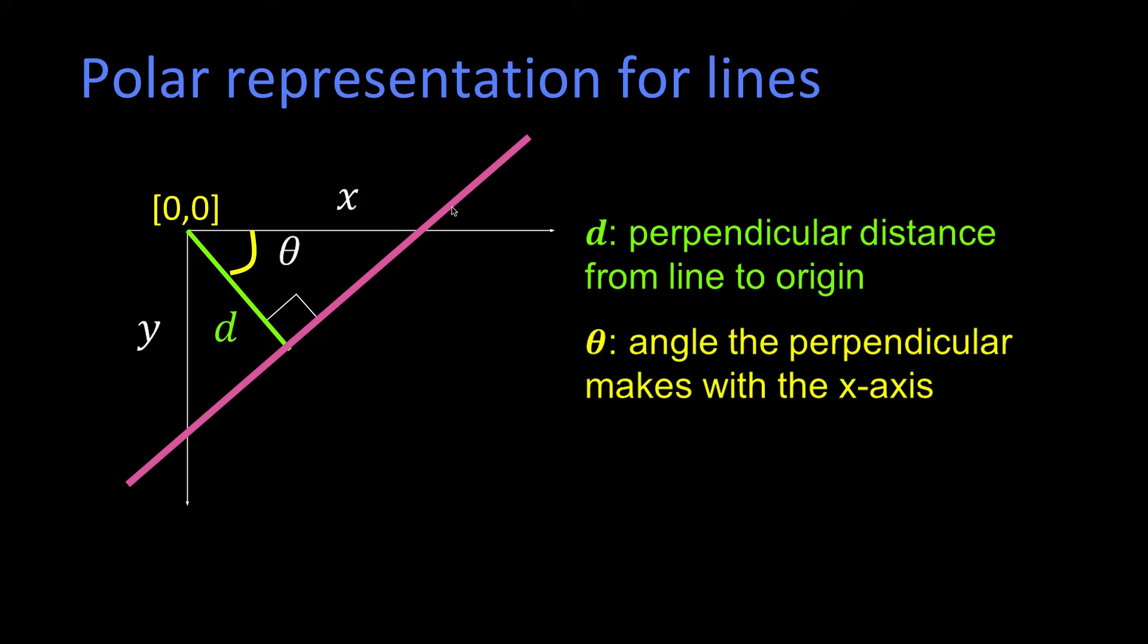You can see that the dot product of any point on the line (x, y) dotted with the (cos θ, sin θ) location of this normal equals d. There are a lot of ways to derive it, but you can show that if you formulate it this way: x cos θ + y sin θ = d.